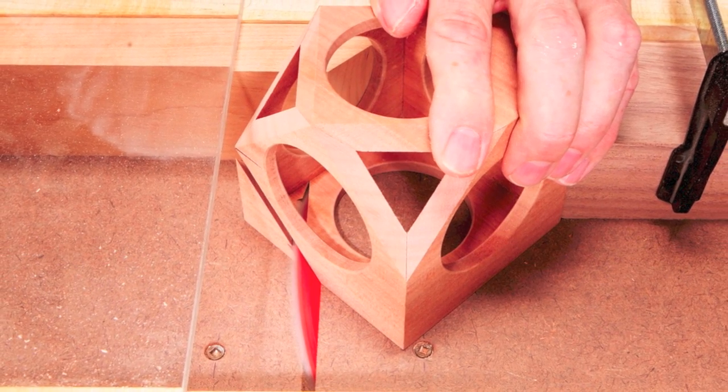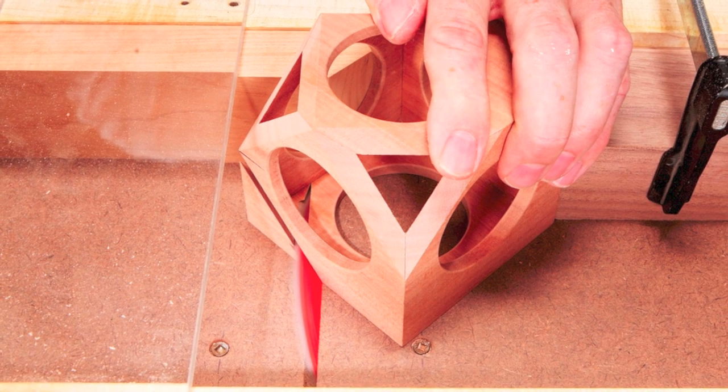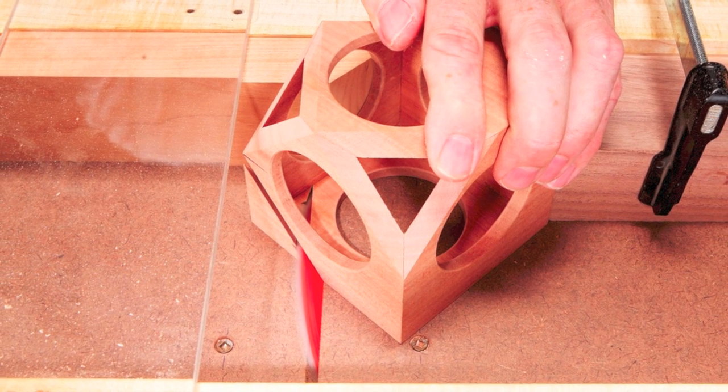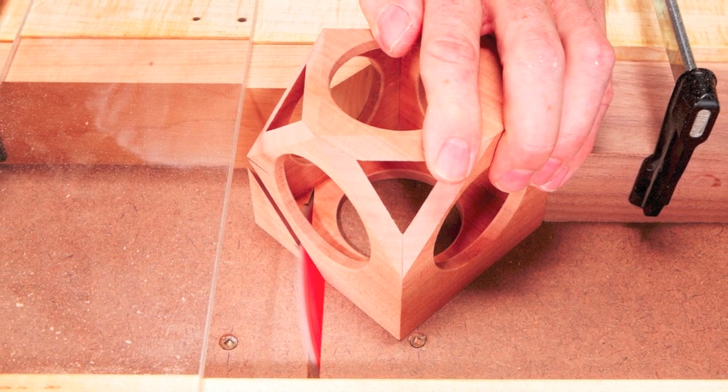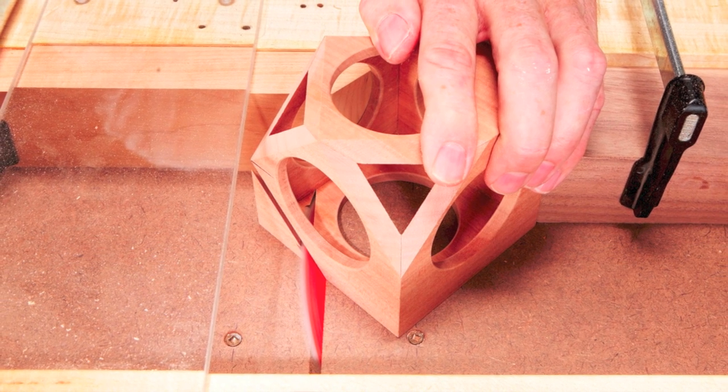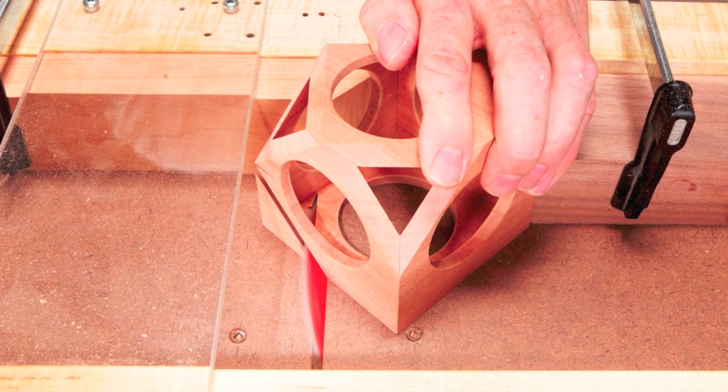Cut all eight corners to transform the cube into a whiffle ball. Set the blade ⅜ inches above the sled, then rotate the cube three times making three cuts to remove each corner.